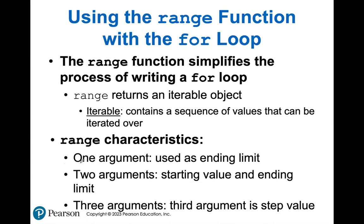A couple of things to note about range: if you specify just one argument, Python automatically assumes that's the ending limit, starting from zero. So range(10) goes from zero to 10. Two arguments gives a starting value and ending value - range(0, 10). Three arguments, as shown earlier, adds the step value specifying how much to add or subtract from the starting value.